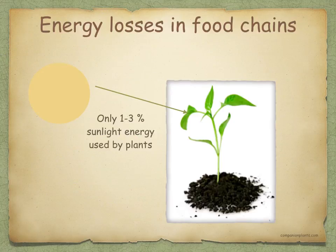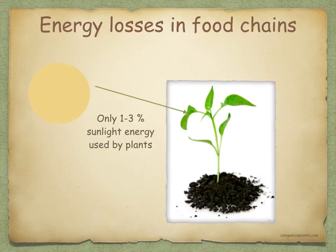Let's have a look at the energy losses in food chains. The sun is the source of all energy for ecosystems. Only a very small percentage of this light energy is captured by green plants and made available to successive organisms in the food chain, and these in turn only pass on a small fraction of the available energy at each stage. Energy gets lost both within and between organisms, and plants normally convert between 1% to 3% of the sun's energy available to them into organic matter.